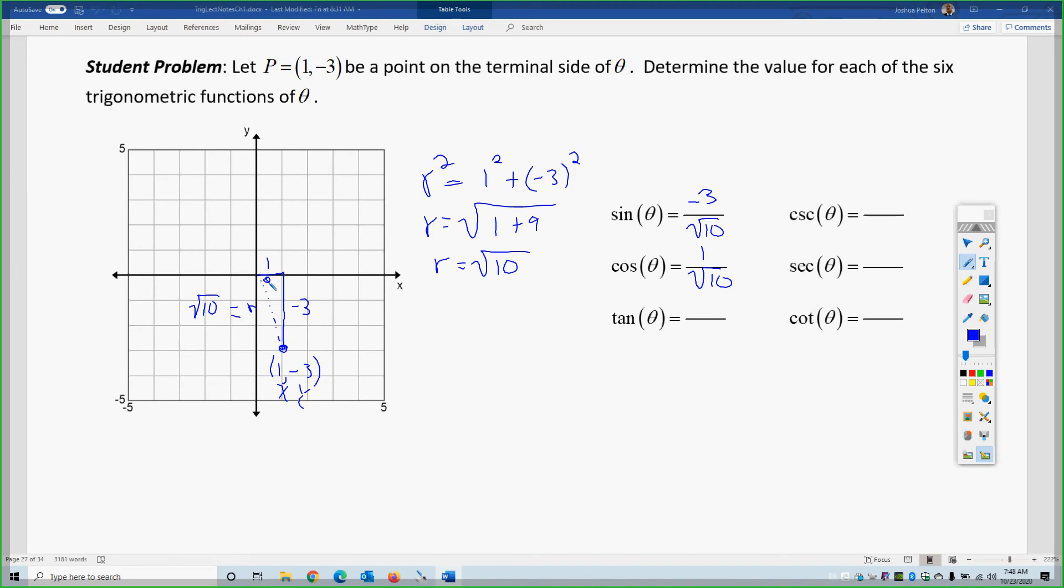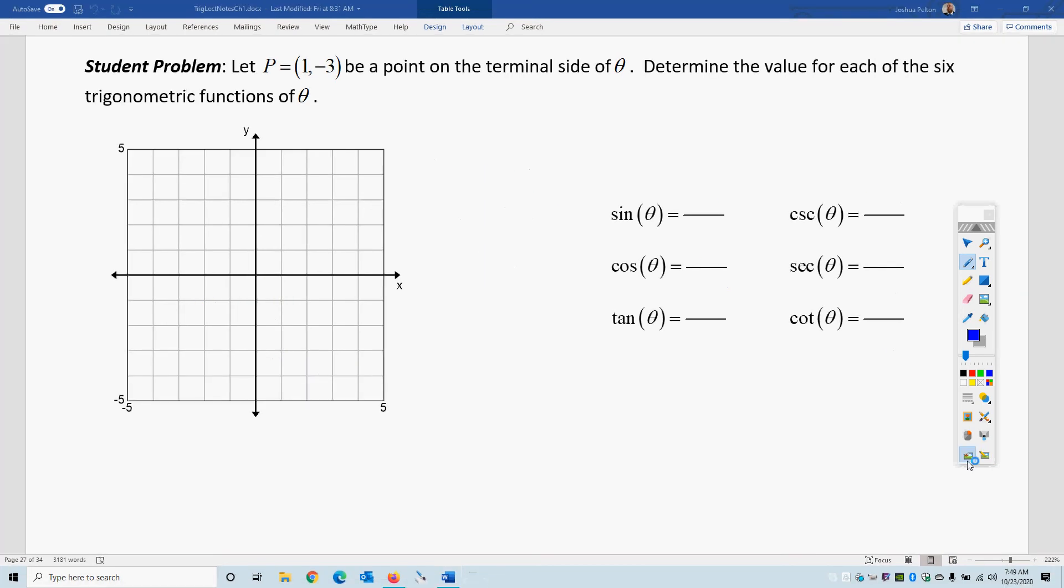Tangent is the y over x, or simply sine over cosine, or opposite over adjacent. So, again, there are three ways to get tangent. Y over x, opposite over adjacent using SOHCAHTOA, or sine over cosine using the trig identity. So, there are three ways to get it. So, this is root 10 over negative 3, root 10 over 1, or negative 1 over 3. You simply put the negative there. Let's go to the next page.